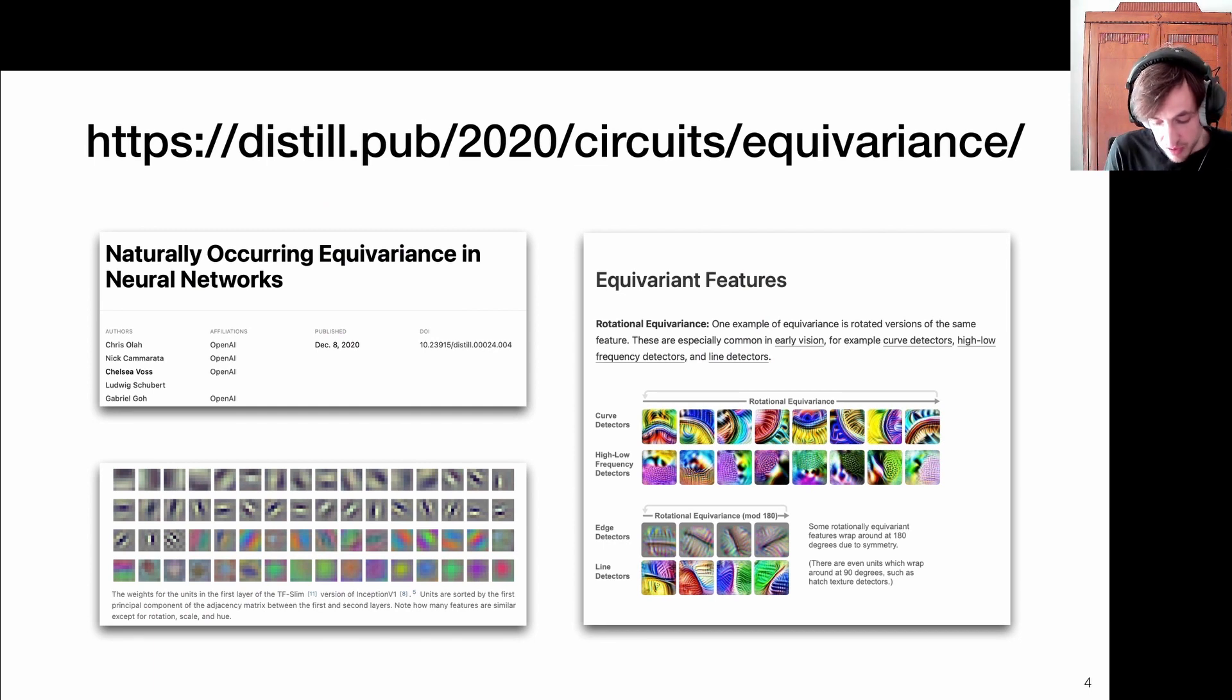And that brings me to this blog post called Naturally Occurring Equivariance in Neural Networks. I definitely recommend checking it out. What they show is that they visualize neural networks in all sorts of ways. You can visualize, for example, the filter bank or the set of kernels learned in the first layers of a neural network. And what you see is that these filters represent some features like edges or line detectors. We see a lot of rotated copies of the same features popping up.